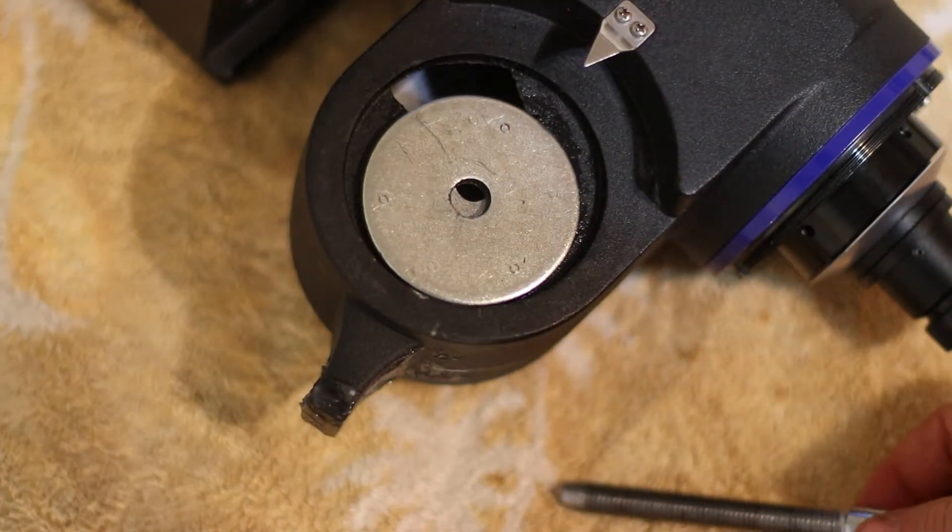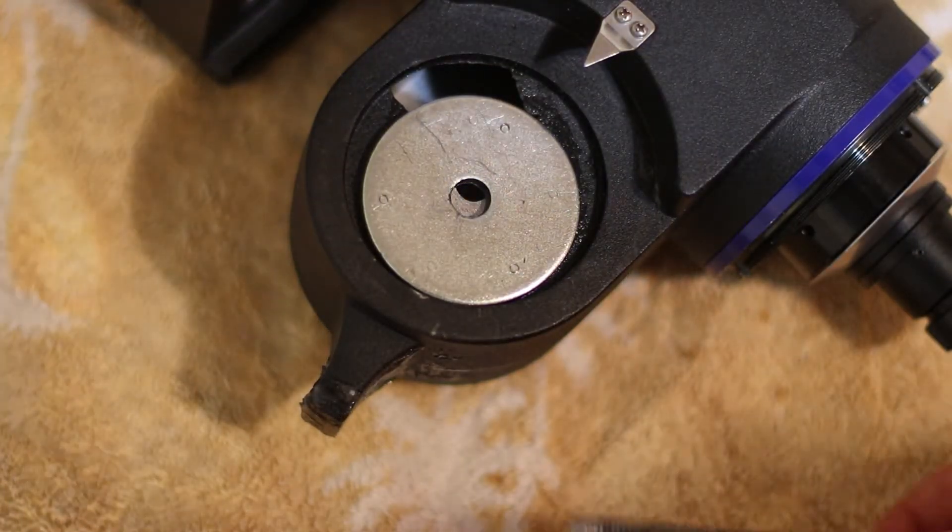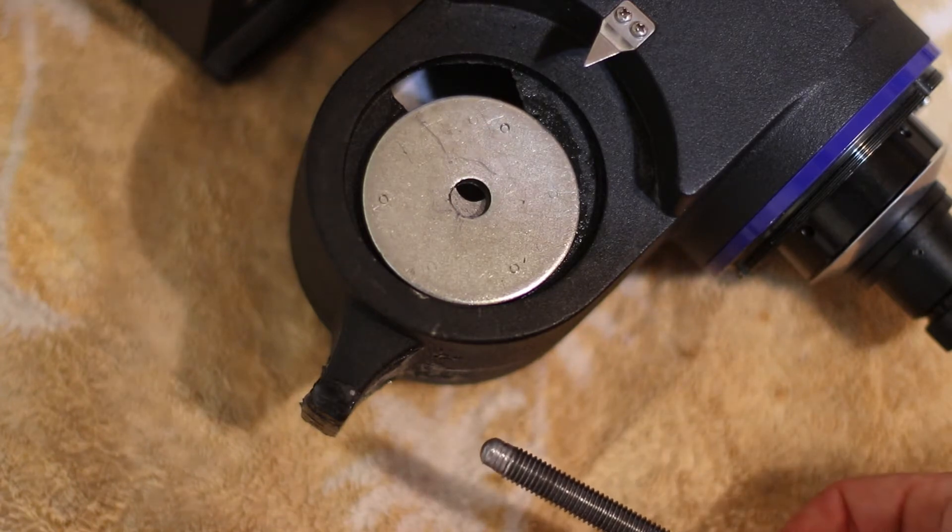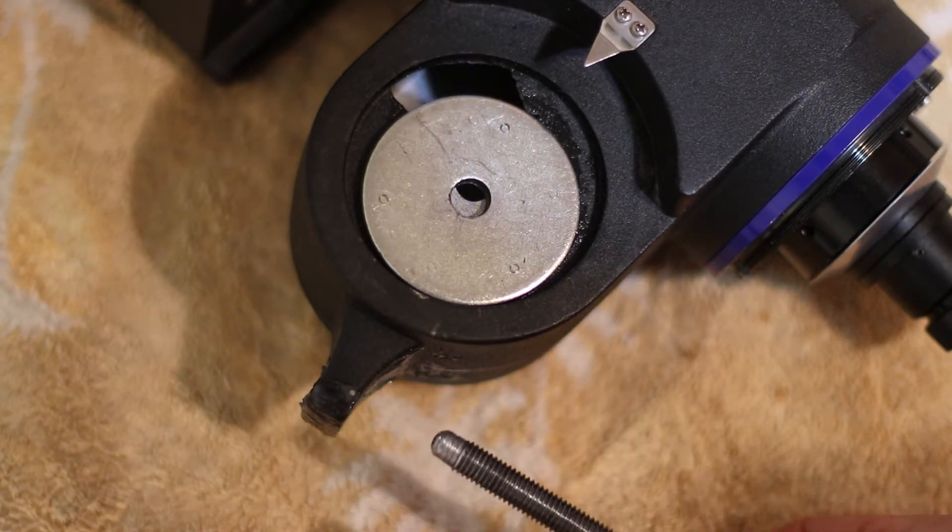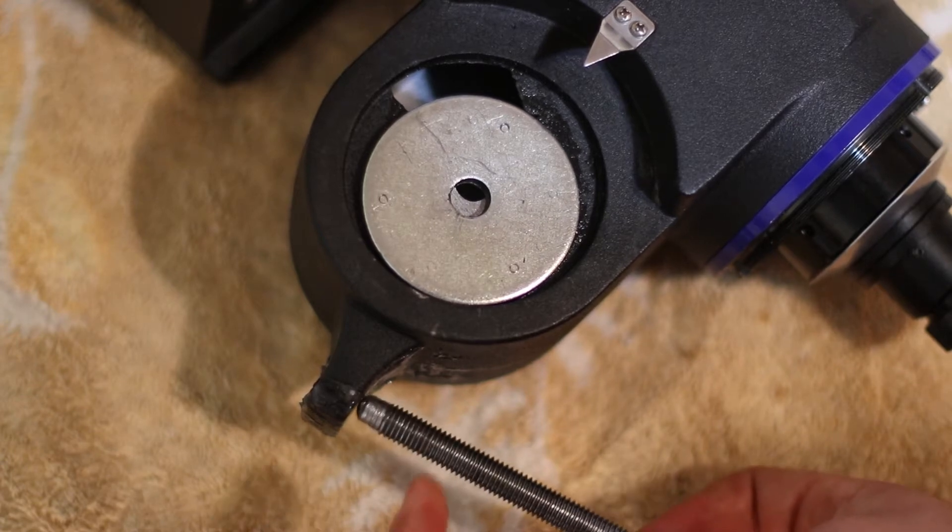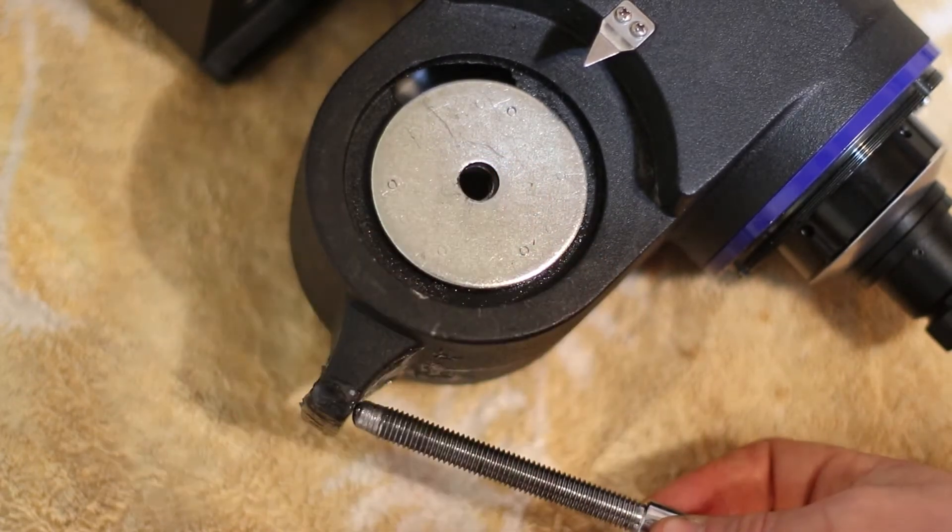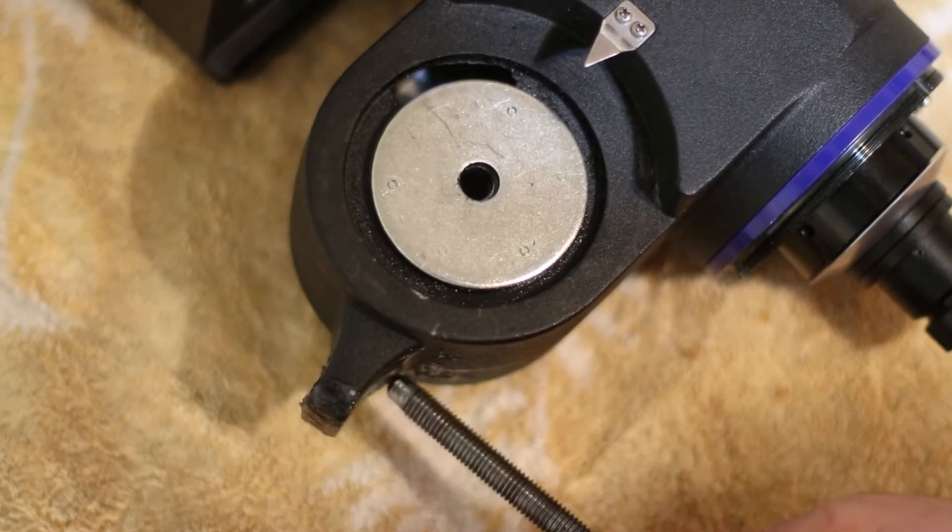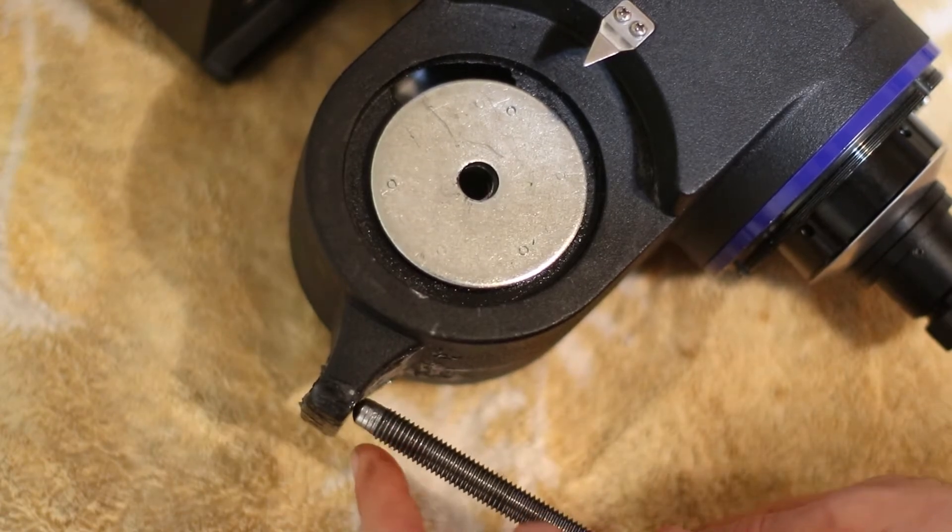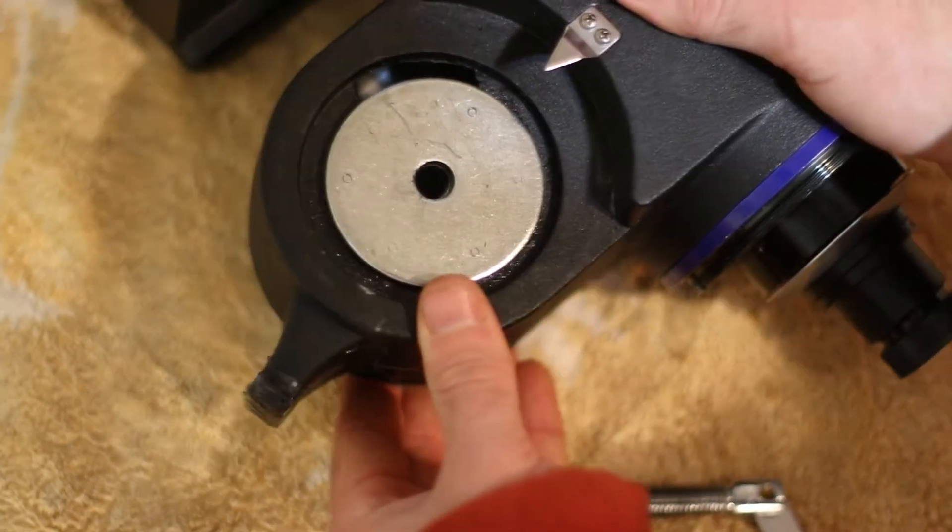So first I wanted to explain what's actually wrong with the design here. The way these Sinta mounts work to adjust altitude is there's this bolt that comes in and it pushes on this tab. You can see it would kind of rotate through there. So you turn this and it pushes on this little tongue here and that kind of forces the whole thing to rotate.